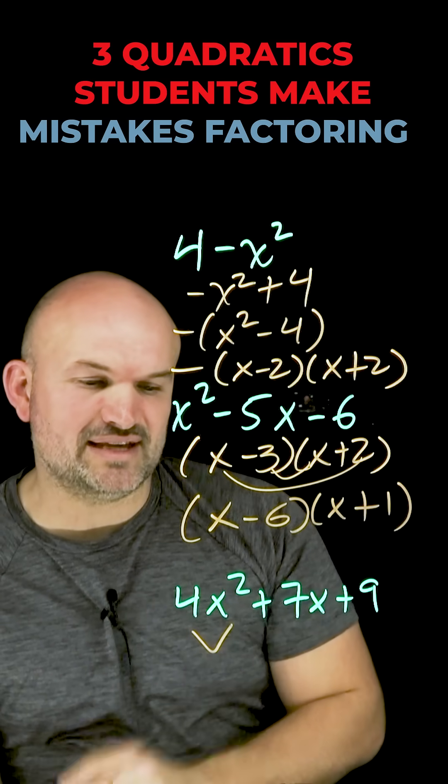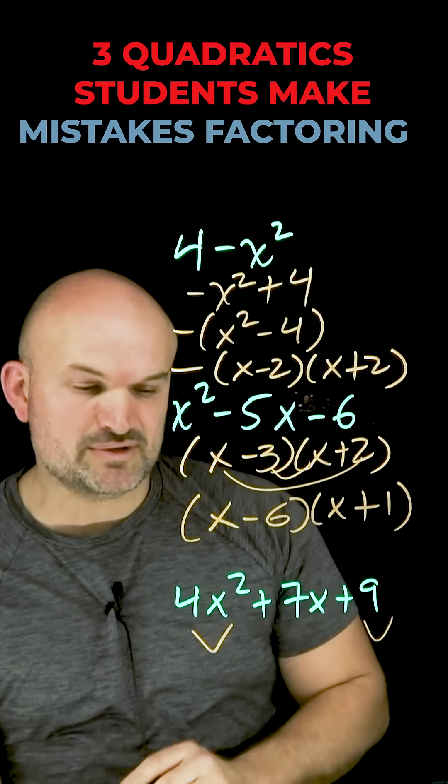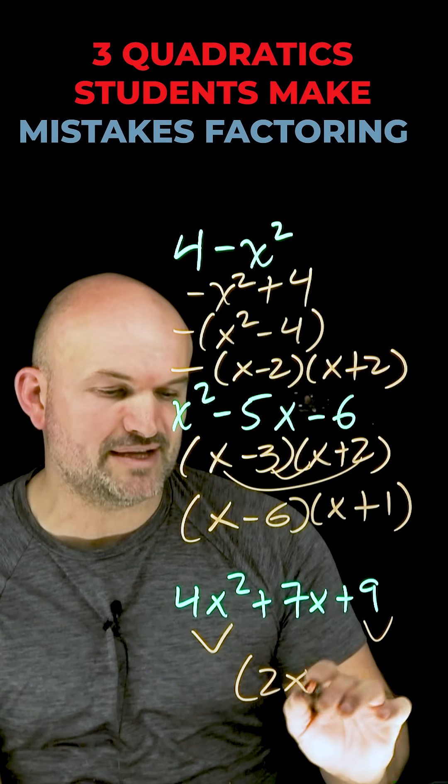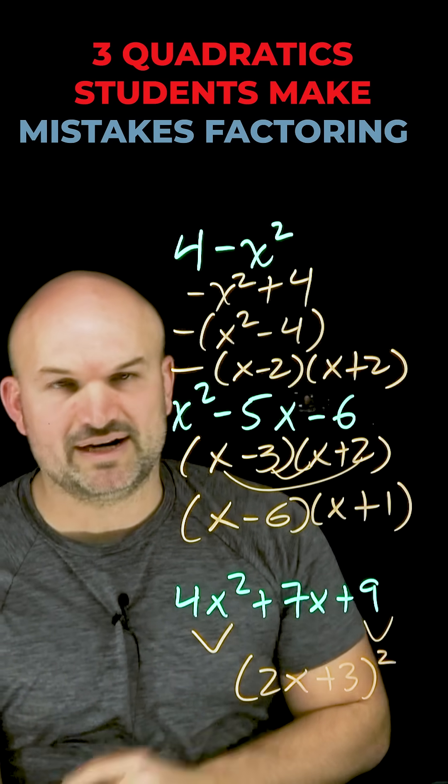The last one, a lot of times when students see the first term is squared and the last term is squared, they immediately think well that's a perfect square trinomial. So therefore, that's going to be 2x plus 3 quantity squared.